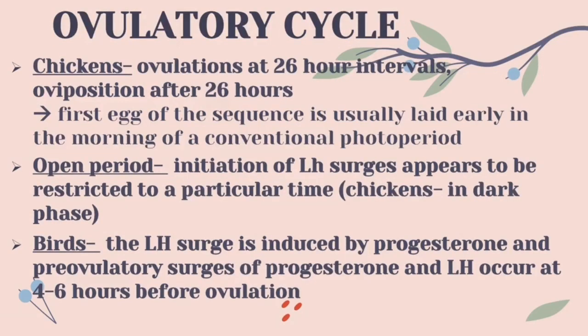For the ovulatory cycle, chickens ovulate at 26-hour intervals and oviposition occurs after 26 hours. The initiation of LH surges is termed the open period, where it appears to be restricted to a particular time.